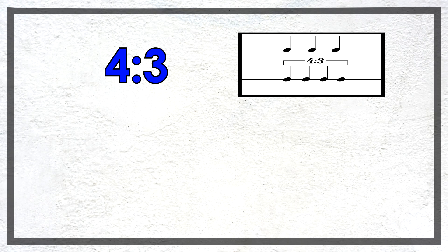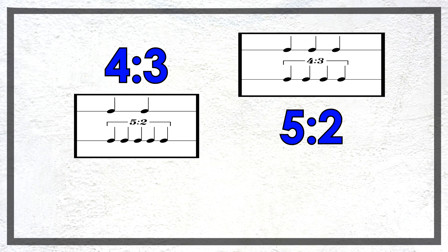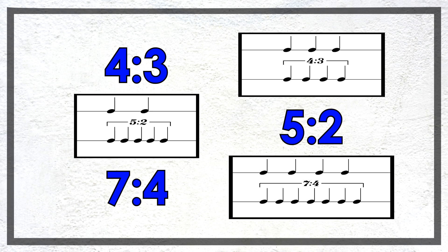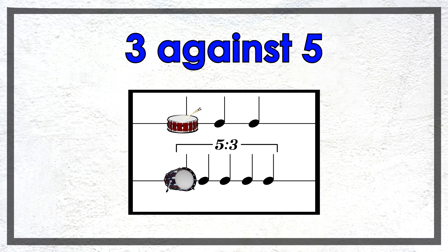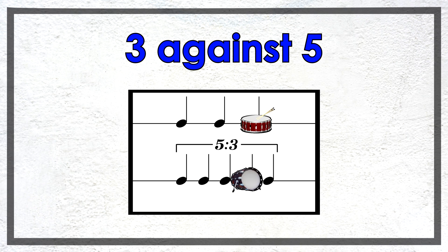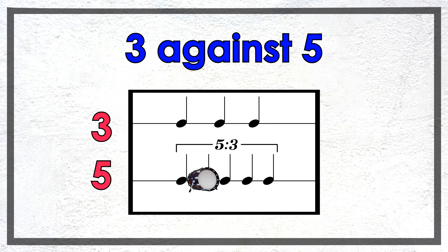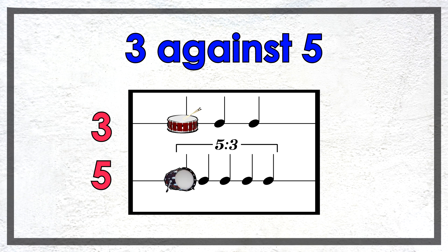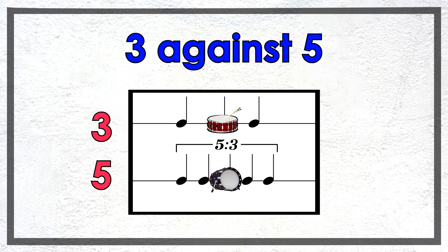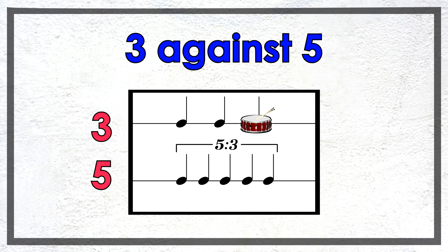Polyrhythms are ratios which represent the number of beats played by two or more rhythms during the same amount of time. For example, if we had a three against five polyrhythm, then we can see that we have three notes on one rhythm played in the same amount of time as five notes on the other rhythm. Since the five side has more notes in the same amount of space as the three side, it's going to sound faster than the three side.